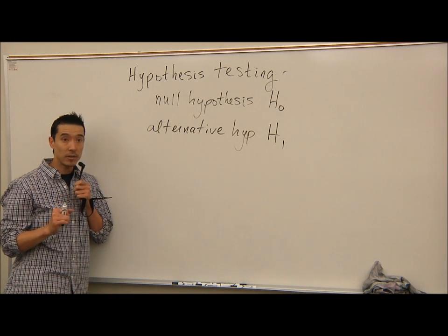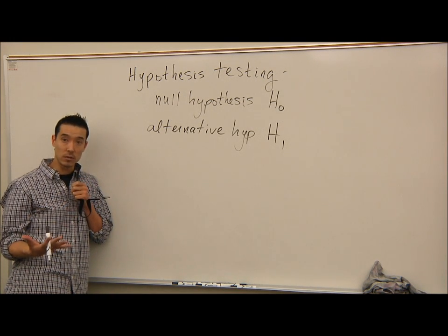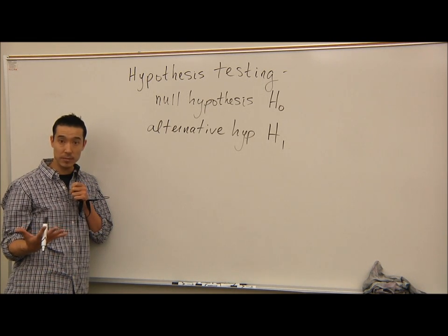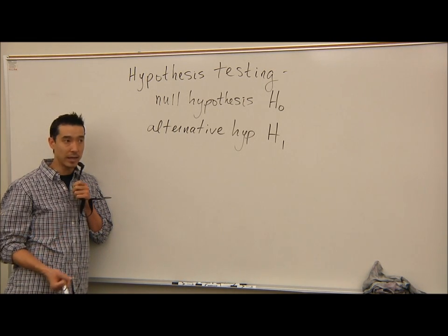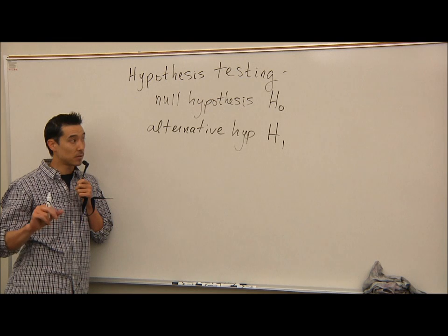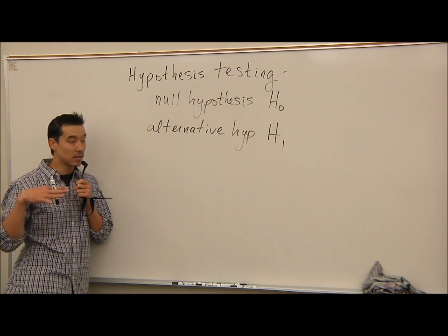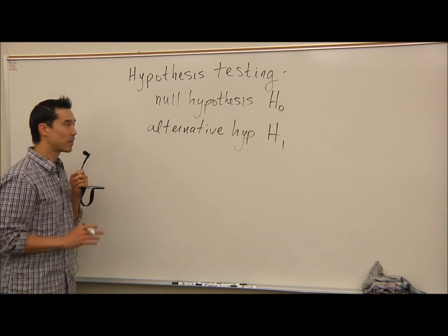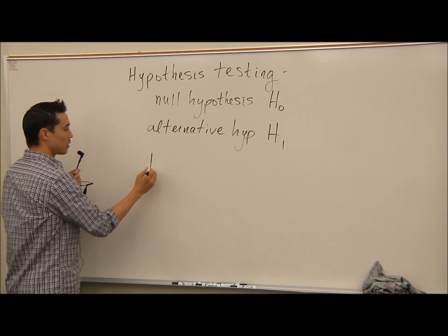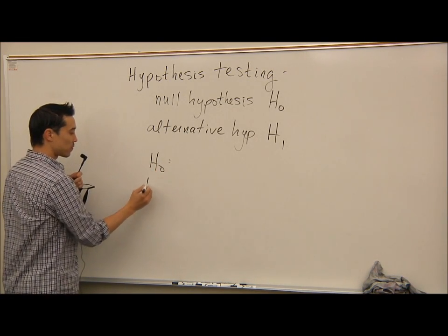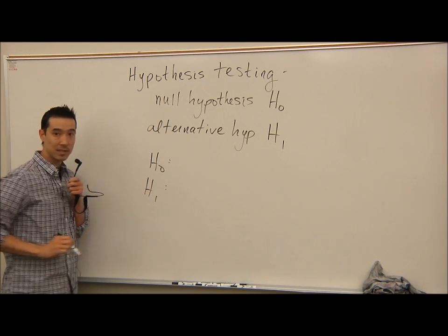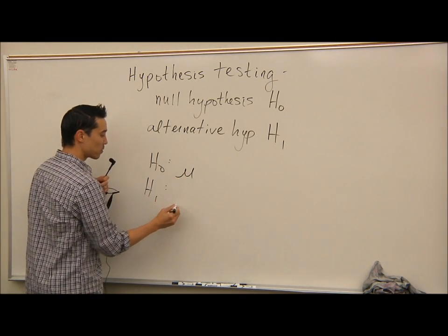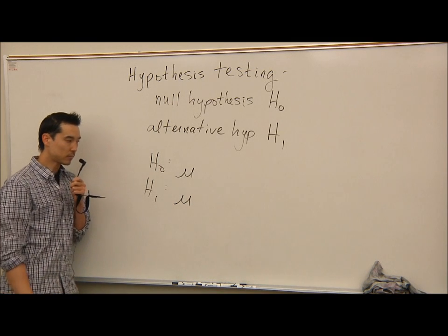For the cold example, the average time it takes to get over a cold is five days. This person is developing medicine they think will decrease how long it takes to recover. We're doing a test for the mean amount of time to get over a cold, so in your setup you're going to have mu, the population mean.